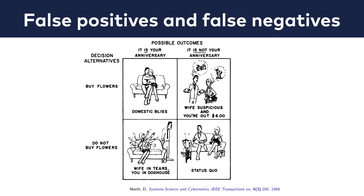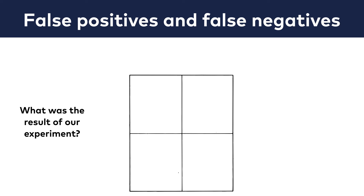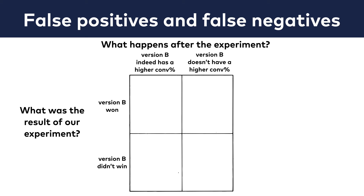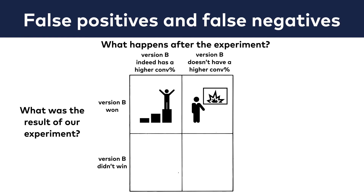Let's see this with an A-B testing example. Our version B seems to be winning, and we want to figure out whether our winning version B is better in real life too. The vertical part of the matrix is what we got as a result in our experiment — version B won or didn't win. We compare that to what happens after the experiment: version B indeed has a higher conversion rate, or it doesn't. If version B has won the A-B test and after publishing it keeps delivering better results, that's a true positive — everyone's happy, you are the colleague of the month. If version B won but in real life it turns out it doesn't bring better results, or even brings worse results, that's a false positive. For an online business, that's a disaster — and for your career too, as you'll have to explain that a mistake happened and that the promised conversion rate increase isn't there.